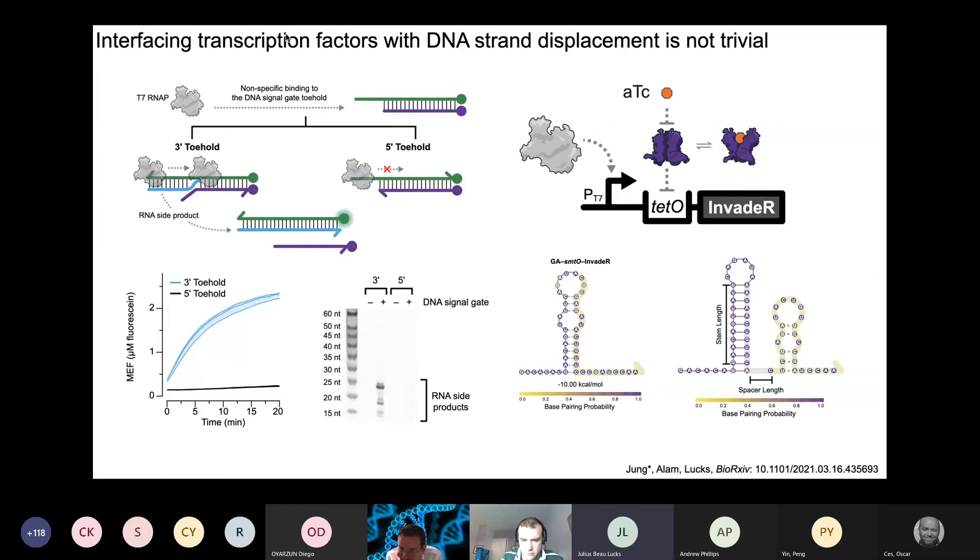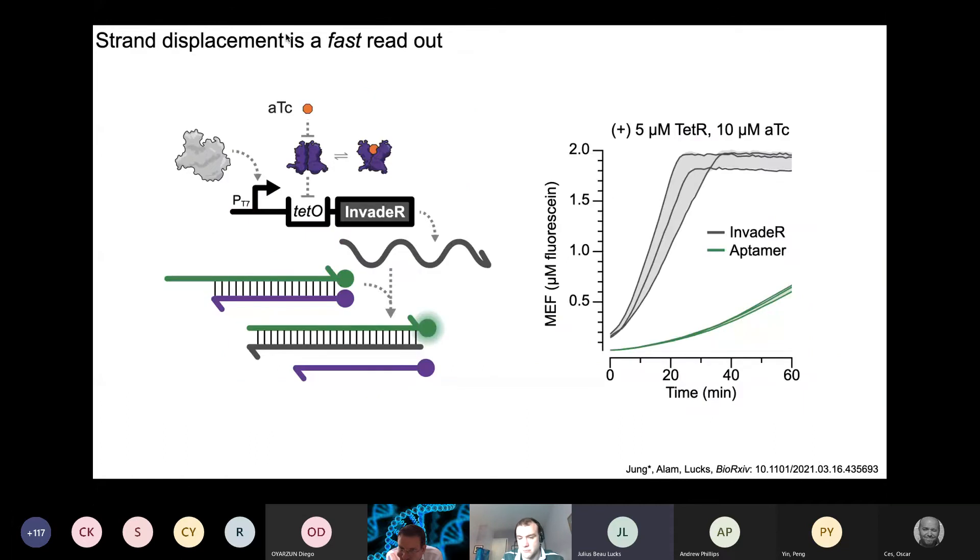There's also some really interesting things about optimizing the T7 promoter sequence to speed up transcription and prevent abortive initiation. So there's lots of tricks to do. And when we put them all together, you get a pretty good payoff right away in terms of speed alone. This is comparing the TET-R sensing circuit with the aptamer in green. You're getting visible signal between 40 and 50 minutes, but with strand displacement, it's about 10 minutes. And so that's really fast reaction and getting to be very usable from a diagnostic standpoint.